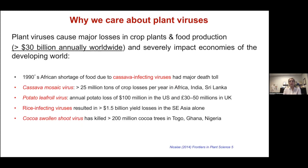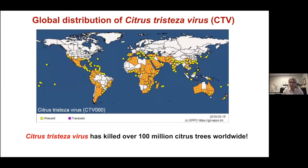Why do we care about plant viruses? Plant viruses cause major losses in crop plants and food production, estimated at more than $30 billion annually worldwide. Some viruses infecting cassava, potato, rice, or coca have resulted in significant losses in crop and revenue in many countries. The virus we work with infects citrus trees and, as shown on this map, is widely distributed around the world — present in South Africa, the United States including Florida and California — and has already killed more than 100 million citrus trees worldwide.